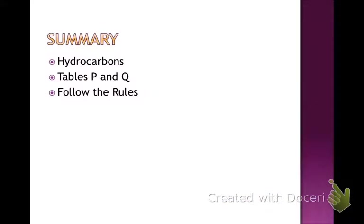Alright, so a quick summary. Hydrocarbons are just made of carbons and hydrogens — they can be small chains or large chains. We'll use Tables P and Q to help us and just follow the basic rules: name the largest continuous chain; name the alkyl groups; number the carbons of the main chain with number 1 being the one closest to the alkyl group. Let me know if you guys have any questions. Have a great day.